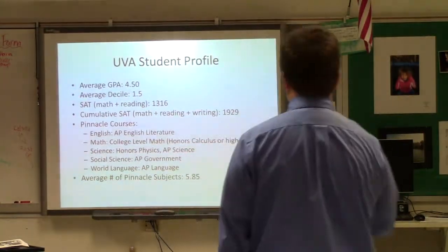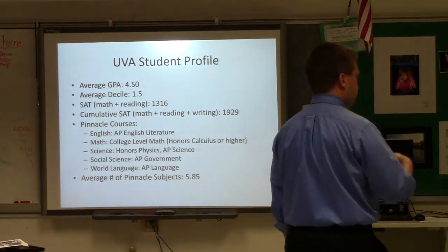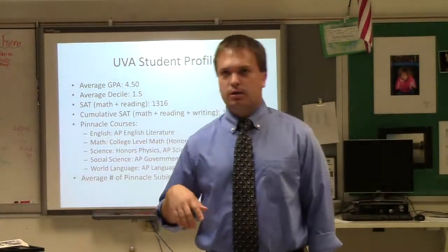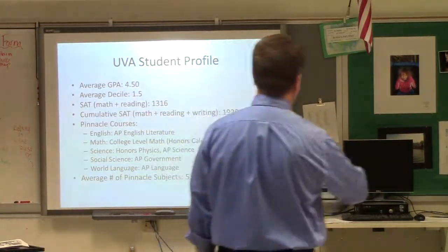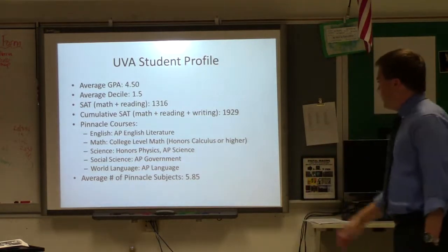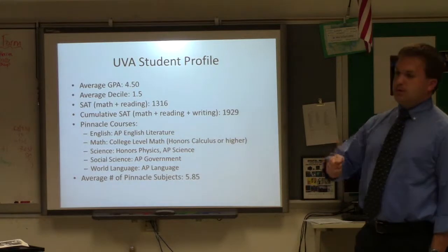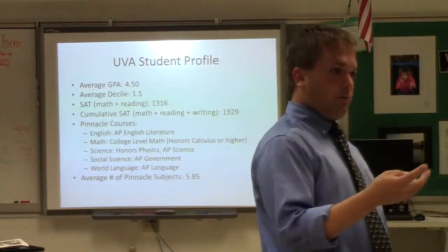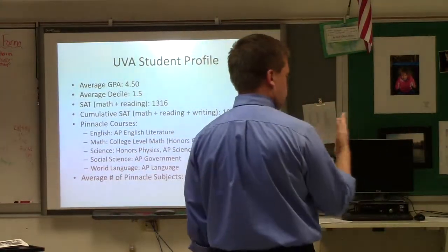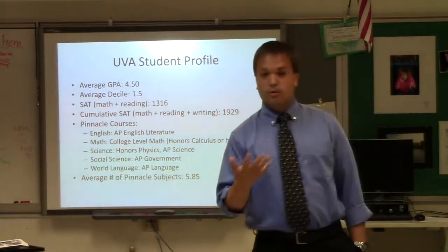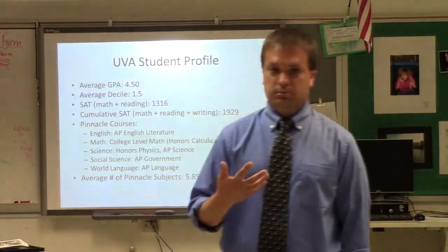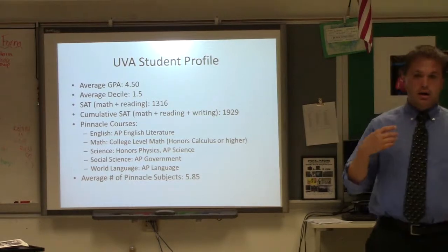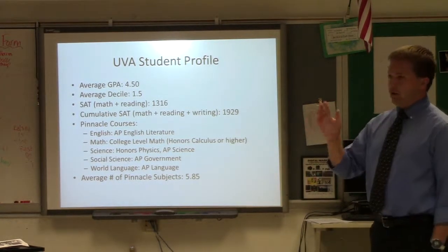The recommendation is: get to honors physics and then get into an AP science. For social studies, AP Government was far and away selected. For world language, 50% of the kids who got into UVA took AP language, and about 13% went beyond it through PGCC, UVA, or online classes. The average number of pinnacle subjects at UVA was 5.85. There are only four core classes plus language, which puts you at five — meaning these kids were taking more sciences, maths, or languages than required, doubling up in areas. They might have gotten through AP language and started a second language to reach the fourth level.